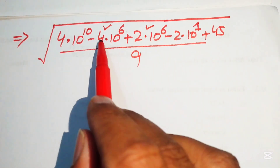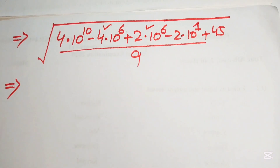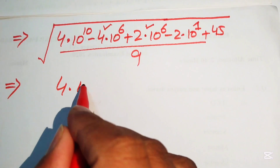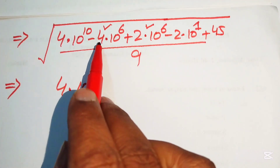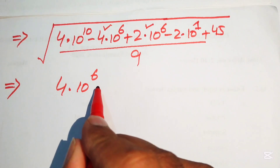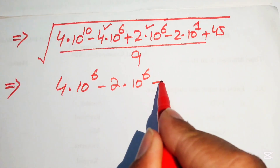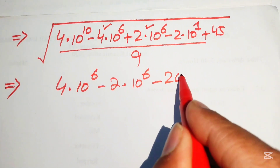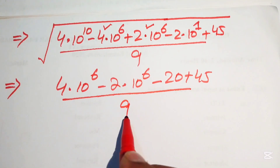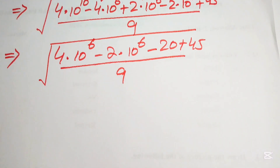Combining like terms: −4 × 10^6 + 2 × 10^6 = −2 × 10^6, and −2 × 10 = −20. So we have square root of [4 × 10^10 − 2 × 10^6 − 20 + 45] divided by 9, which simplifies to [4 × 10^10 − 2 × 10^6 + 25] / 9 under the square root.